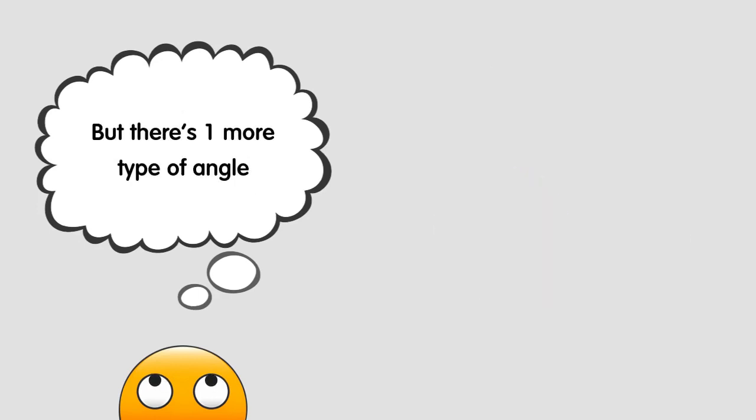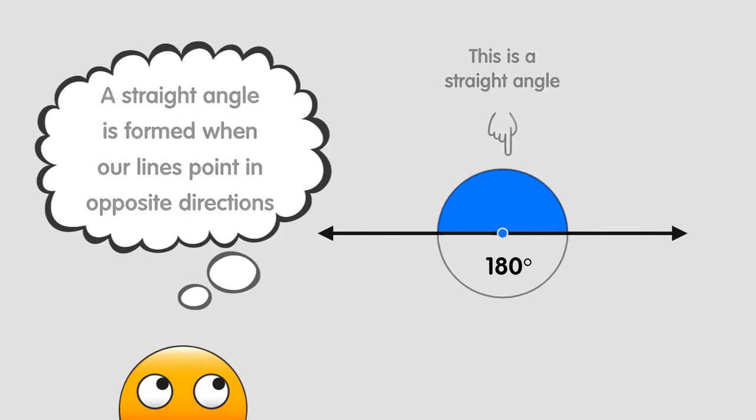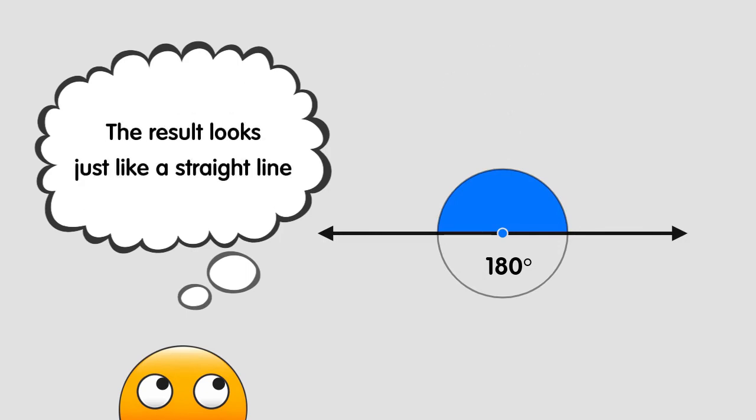There's one more type of angle that's important to learn. It's called a straight angle. A straight angle is just what we get when we rotate our lines so that they point in exactly opposite directions. The result looks just like a straight line, which is why it's called a straight angle.